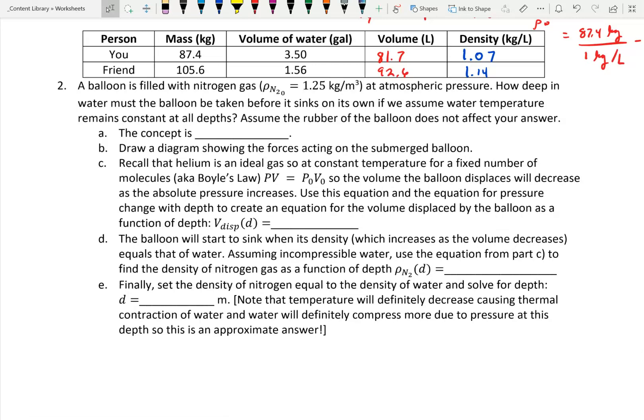Second problem. A balloon is filled with nitrogen gas, and the density of nitrogen gas is 1.25 kilograms per meter cubed at atmospheric pressure. How deep in water must the balloon be taken before it sinks on its own? You might say it doesn't matter what the depth is. If it floats, it floats. If it sinks, it sinks. But the issue here is that the gas is highly compressible. A gas can be compressed fairly easily. We're going to treat the water as perfectly non-compressible, and the water temperature stays the same all the way down.